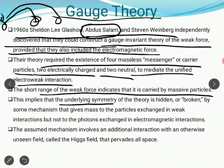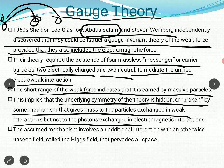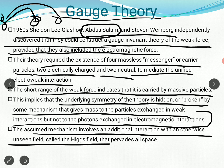This implies that the underlying symmetry of the theory is hidden or broken. Electromagnetic and weak theory have a lot of different aspects which superficially look difficult to combine, but gauge theory says they can be combined. There must be some mechanism that allows them to be combined — broken by the same mechanism that gives mass to the particles exchanged in weak interaction but not to the photons exchanged in electromagnetic interaction. This assumed mechanism involves an additional interaction with an otherwise unseen field called the Higgs field that pervades all space. As you know, in 2012 the Higgs boson was discovered.